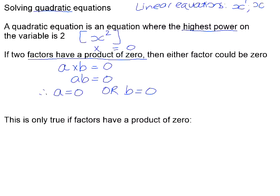They don't both have to be 0 at the same time, so it's not an and situation, it's an or situation. If a is 0, 0 times b will be 0, your equation will be true. If b is equal to 0, then a times 0 will be 0, and your equation will be true. So we use this to help us solve a quadratic equation.